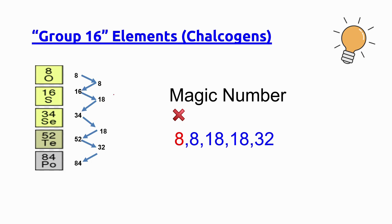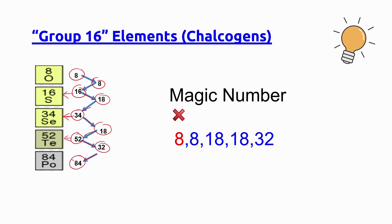Now let's practice writing the group 16 elements, also known as chalcogens, with the help of magic numbers. The atomic number for oxygen is 8. 8 plus 8 gives 16, the atomic number for sulfur. 16 plus 18 gives 34, the atomic number for selenium. 34 plus 18 gives 52, the atomic number for tellurium. 52 plus 32 gives 84, the atomic number for polonium.